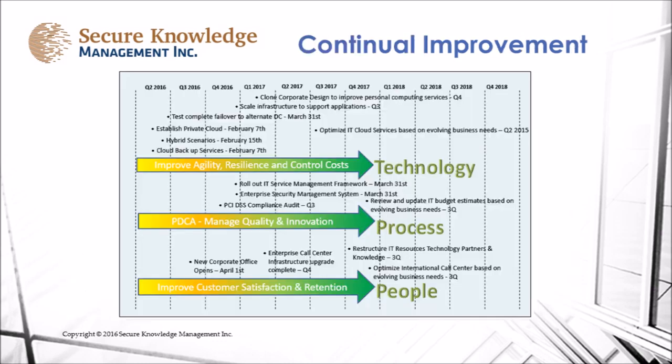Continual improvement: On this slide you see a road map — a strategic road map that plots out change for the next three years. We've taken the things learned from our gap assessment and from our risk assessments and plotted them out to make improvements, moving us from tier 1 to tier 4 over the next three years.